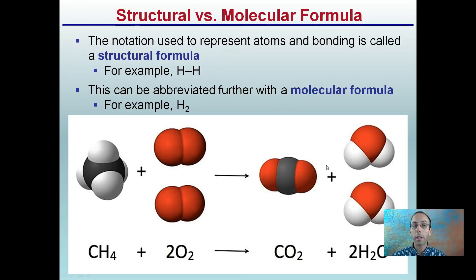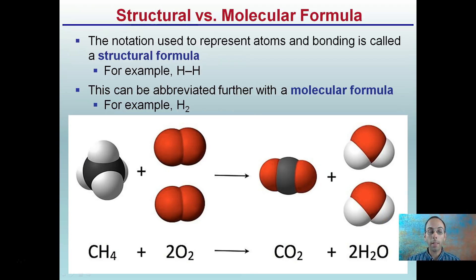Now, structural versus molecular formula. The notation used to represent atoms in bonding is called the structural formula. The structural formula. That's represented here. It depicts the structure how those atoms are organized. Pretty simple when it's only two hydrogens. This can be abbreviated further to what we call the molecular formula. That example here is just H2. So here we also see an example of the structural formula. And then down here we see the molecular formula. All of these are representing the same thing. Here's the big black circle here is carbon with four hydrogens. Here's our two oxygens and two oxygens forming carbon dioxide and two water molecules. So we could say they're essentially telling the same story but depicting it in different ways.